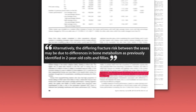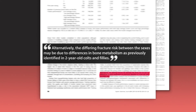Another strategy you can use is to suggest explanations for the findings: 'Alternatively, the differing fracture risk between the sexes may be due to differences in bone metabolism, as previously identified in two-year-old colts and fillies.' Notice how the example says 'may' to indicate that this isn't definitely the explanation. Language like this often appears when explaining your findings. It's called hedging, and you can learn more about it in episode 4 on the results section.